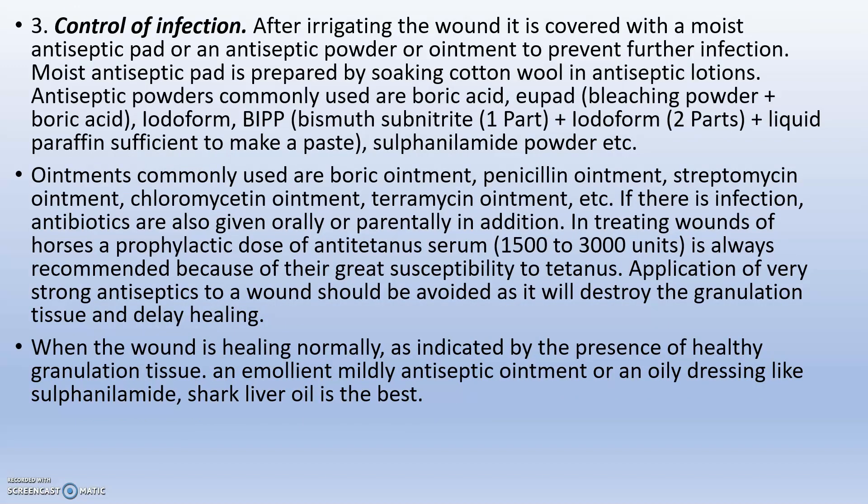Next is control of infection. After irrigation, the wound is covered with a moist antiseptic pad, antiseptic powder, or ointment to prevent further infection. A moist antiseptic pad is prepared by soaking cotton wool in antiseptic solution. Antiseptic powders commonly used include boric acid powder, iodoform powder, BIP, and sulphanilamide powders. Common ointments used are boric acid ointment, penicillin ointment, streptomycin ointment, chloromycetin ointment, and terramycin ointment, all of which have antibacterial action.